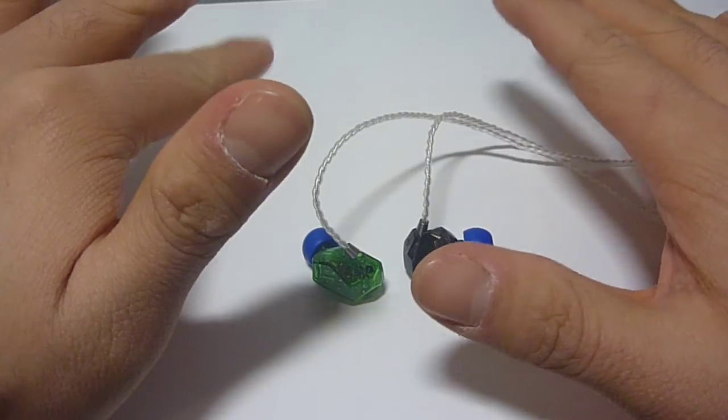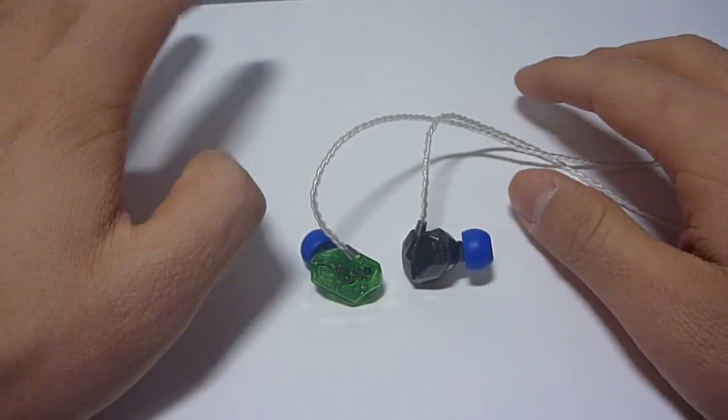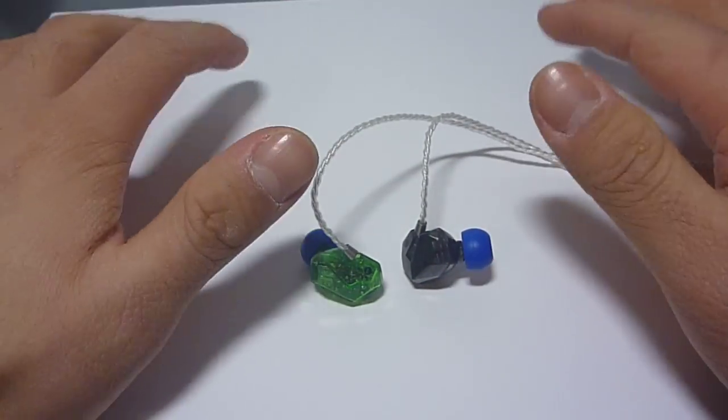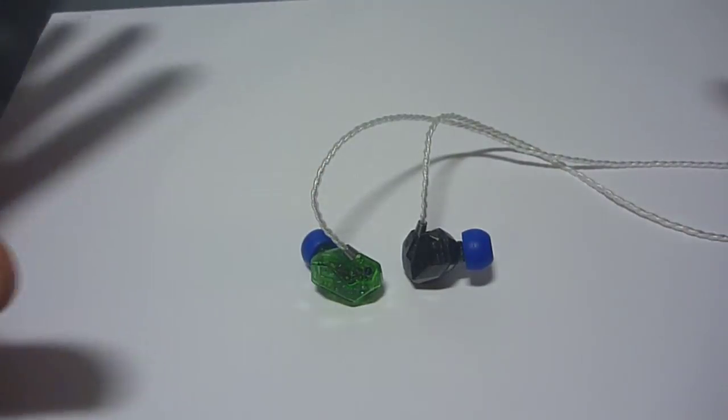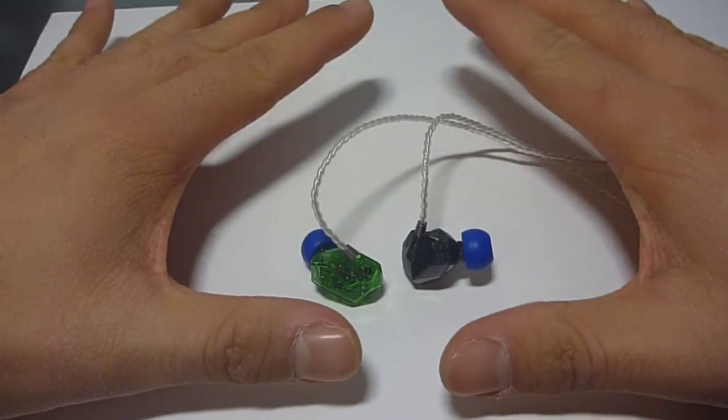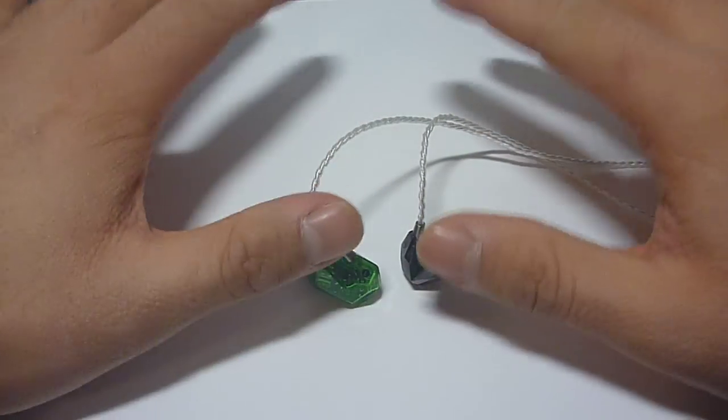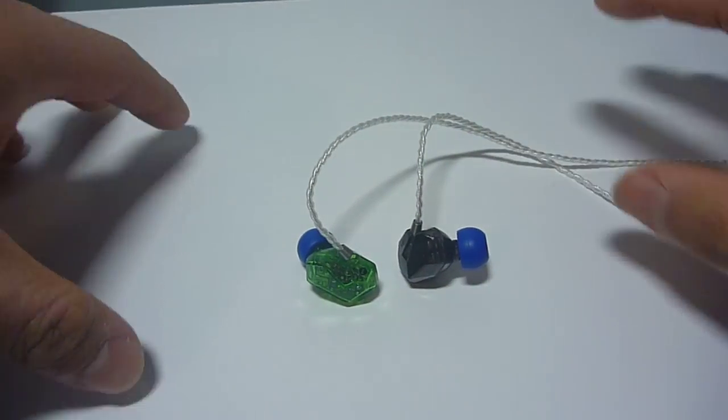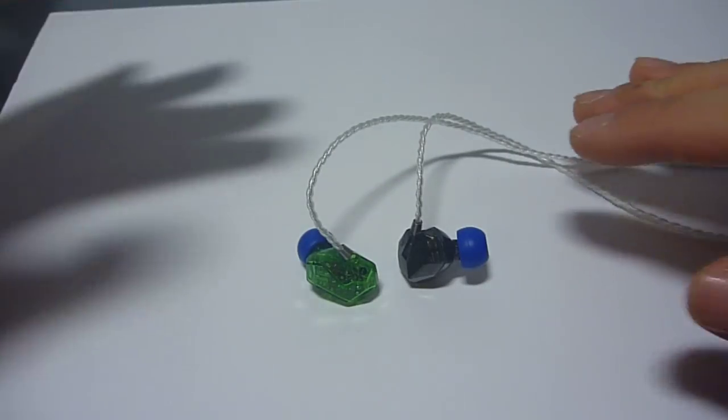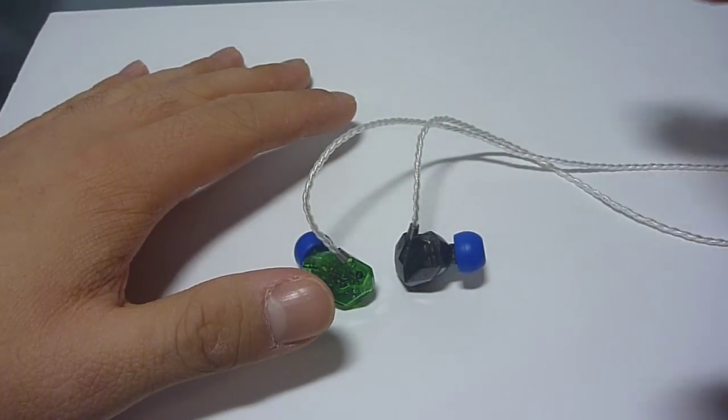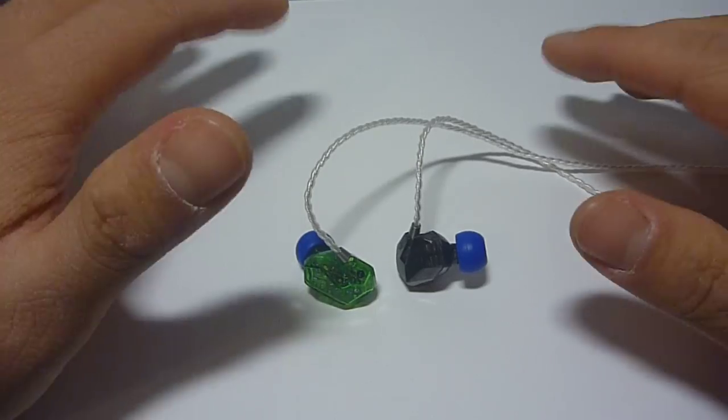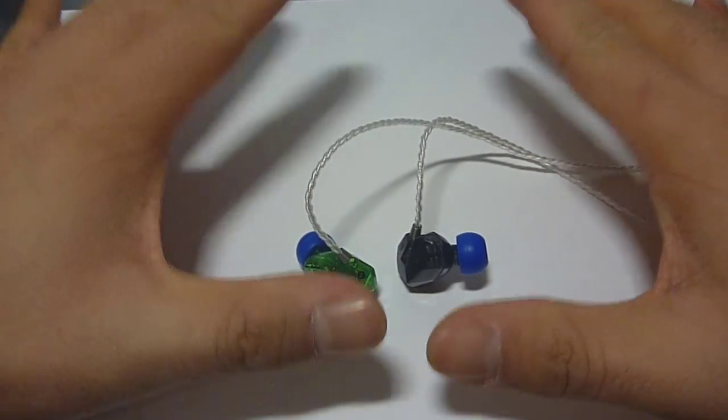Going into the treble, the treble along with the bass is more of a side dish that complements the main course, which is the midrange. The bass and treble are more laid back in the mix, smoother. They definitely won't steal the spotlight away from the midrange.